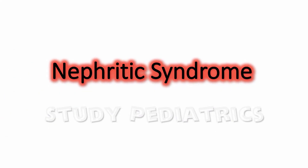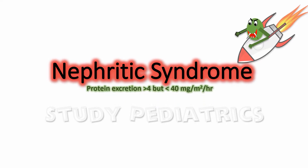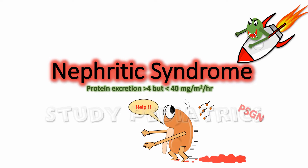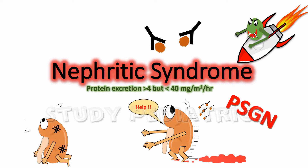Nephritic syndrome is yet another clinical condition in which excess protein is excreted from the body, but with differences in range and other signs and symptoms. Nephritic syndrome has proteinuria ranging between 4 to 40 mg per meter square per dl.